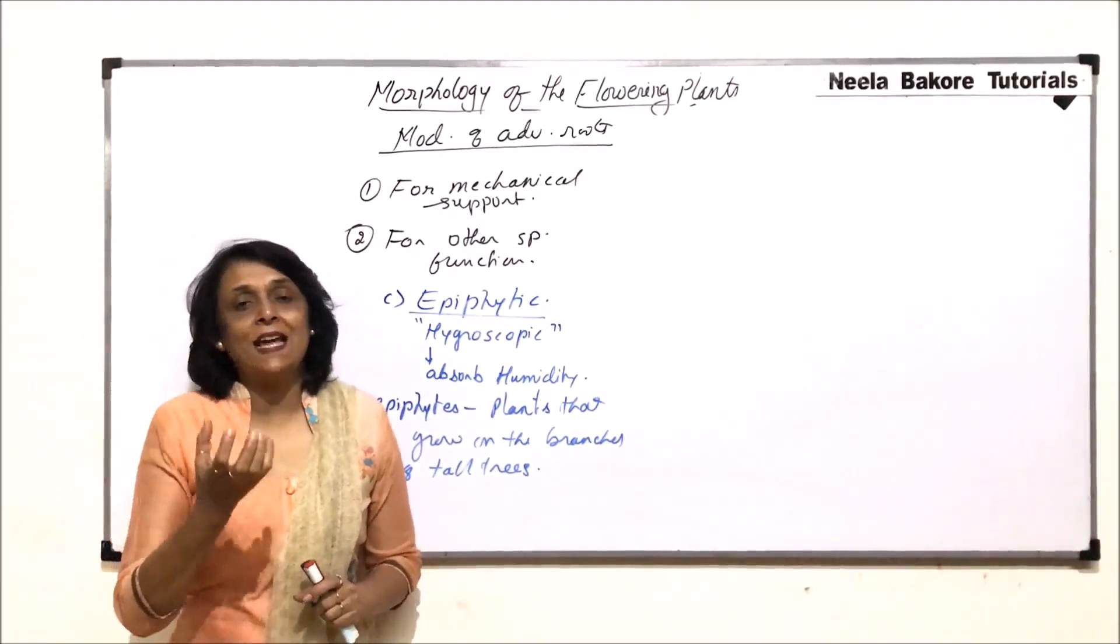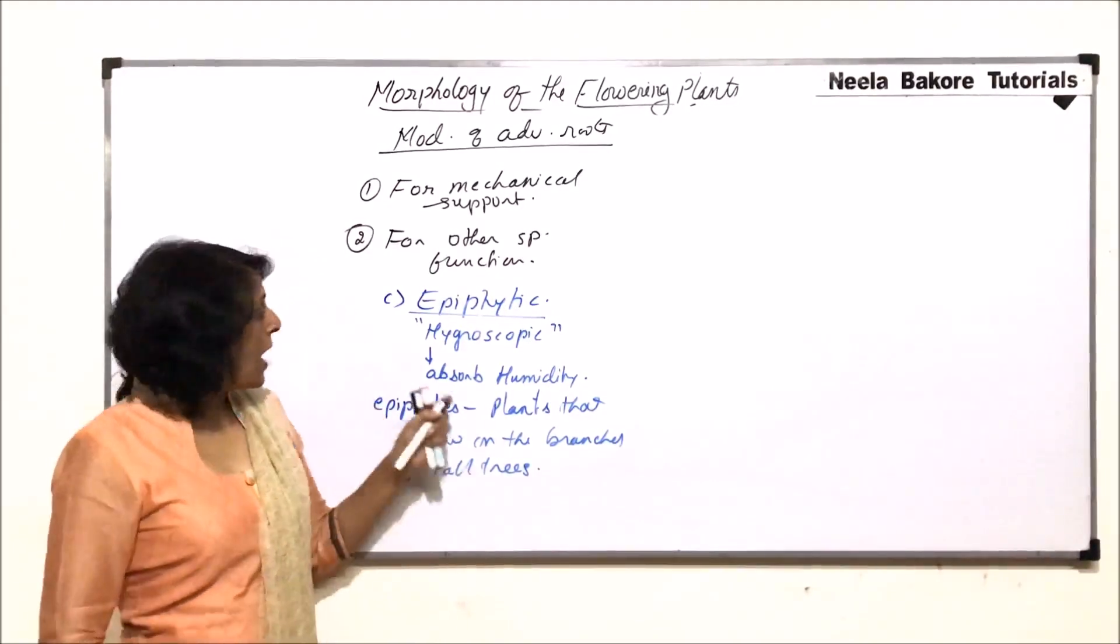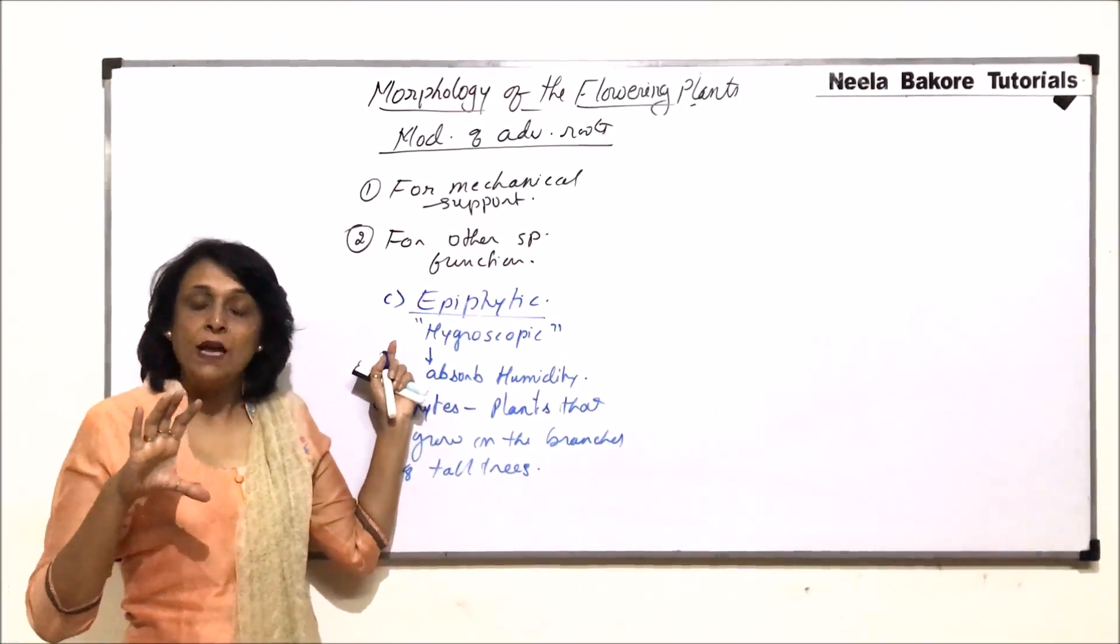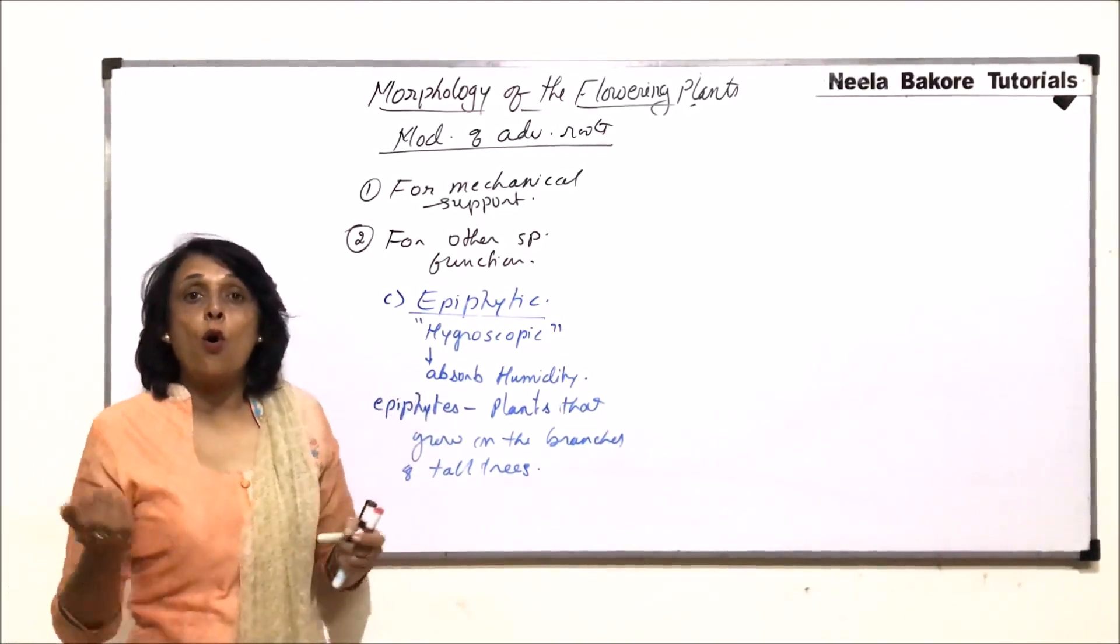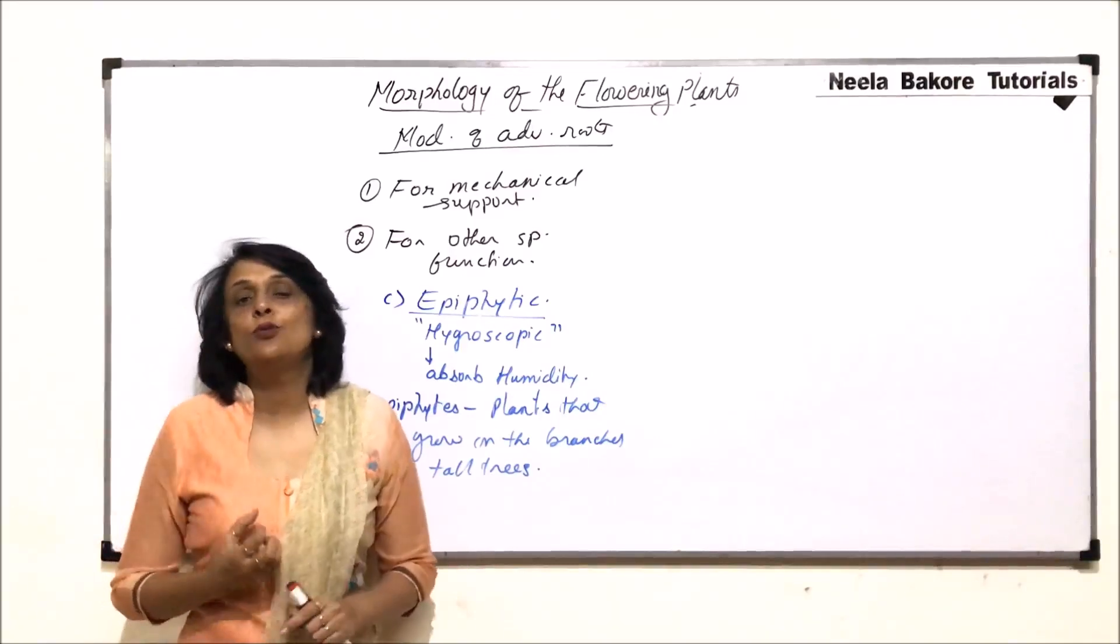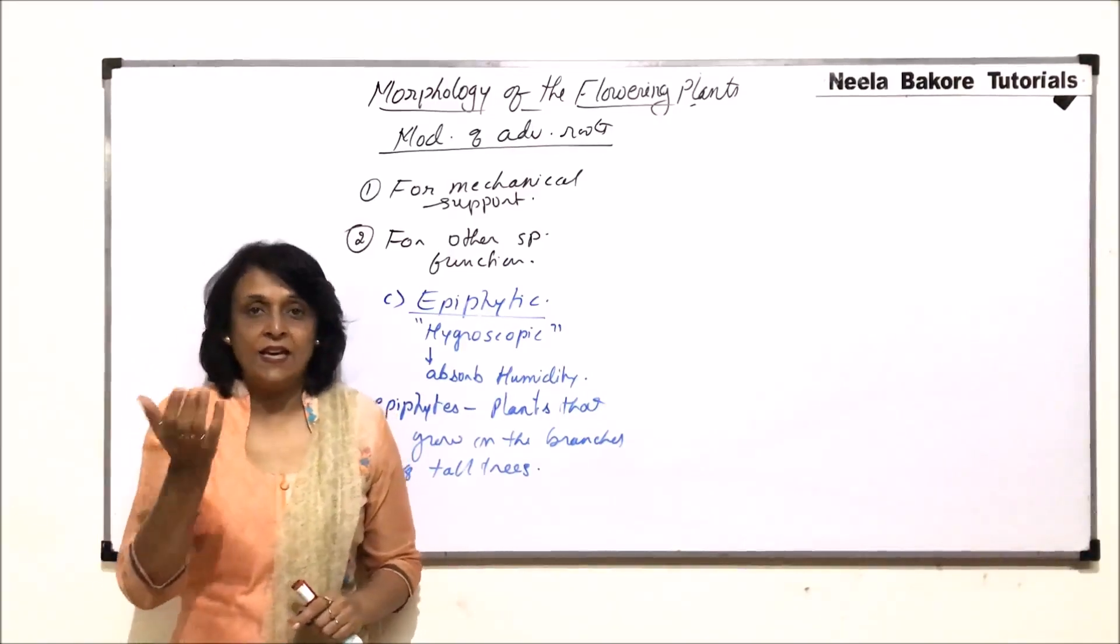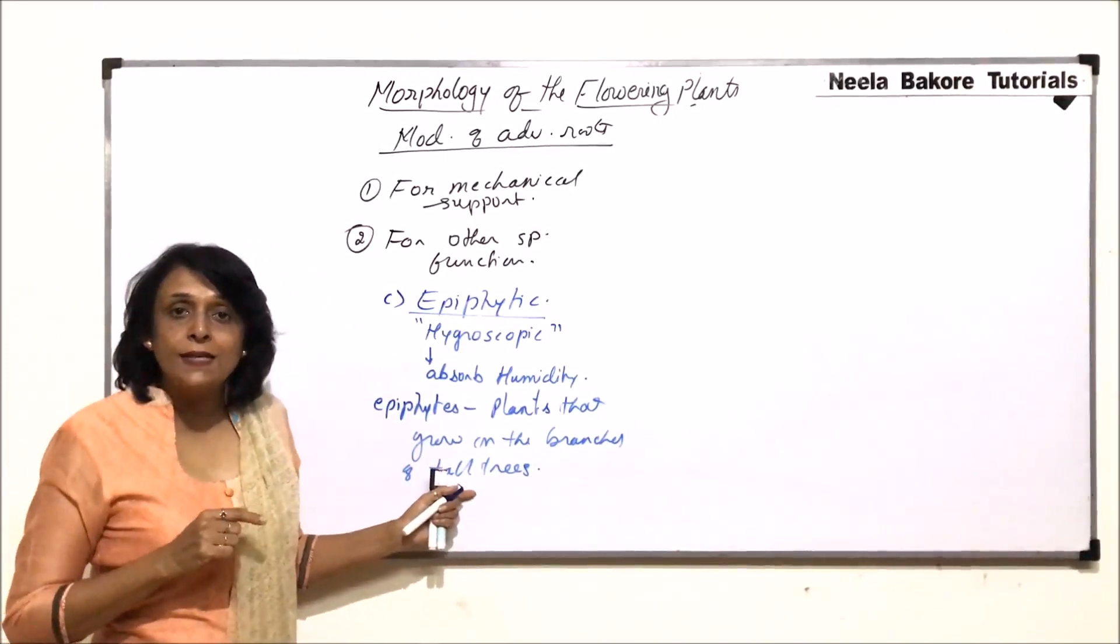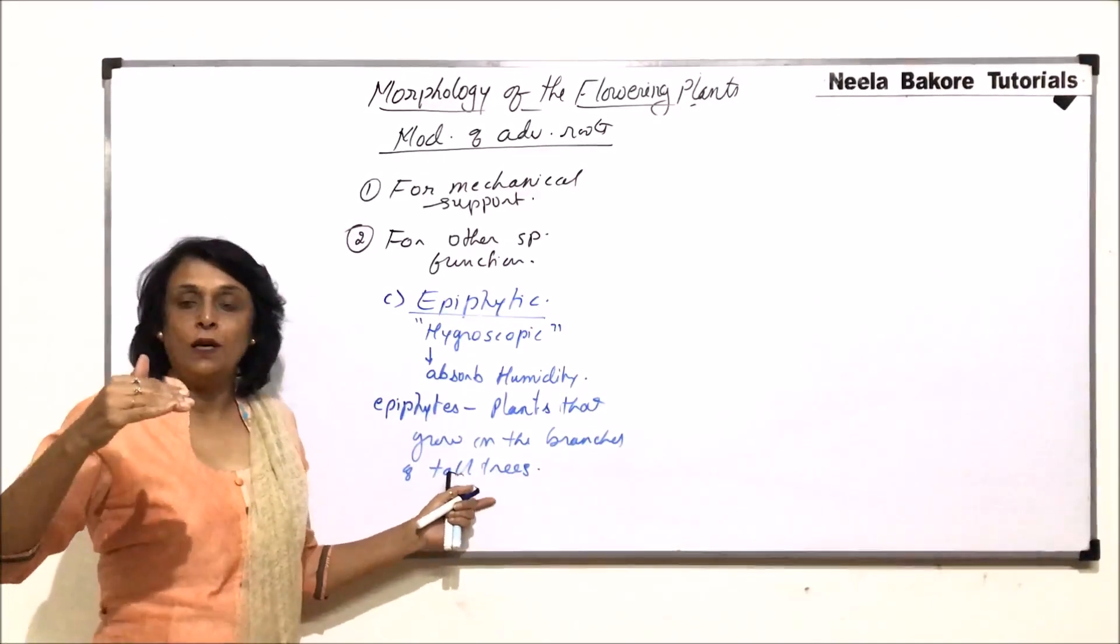very, very less light falls on the ground. So, how would this plant get light? This plant is a very small plant. So, these epiphytes, they grow on the branches of tall trees so that they are able to reach up to the sunlight.